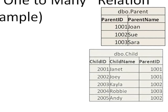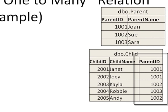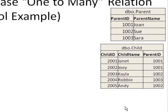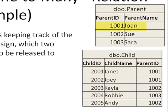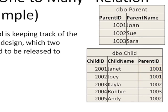Here's a common proposed solution for this example. We decided to put the parent ID in the child table pointing to the parent. This allows us to answer such questions. Assuming the school is keeping track of the database using this design, which two children are allowed to be released to Joan? Joan is parent ID 1001. So we scan the child table and we see two entries. This tells us that Janet and Joey belong to Joan.